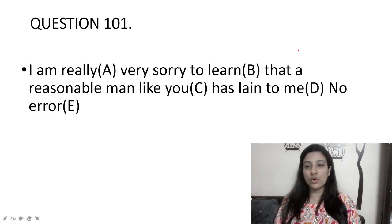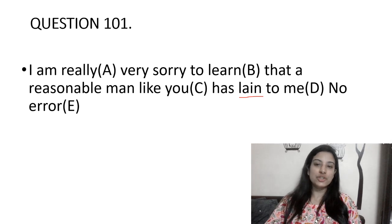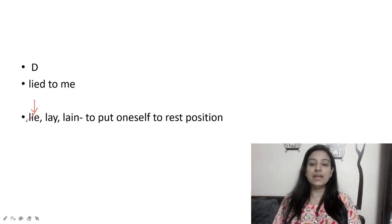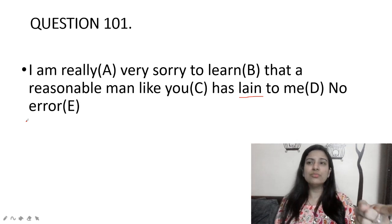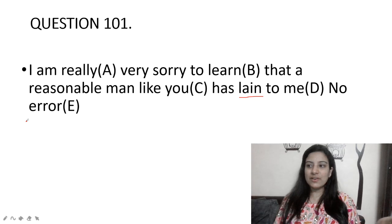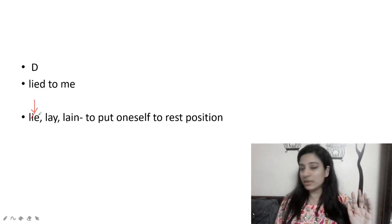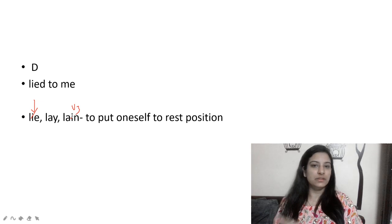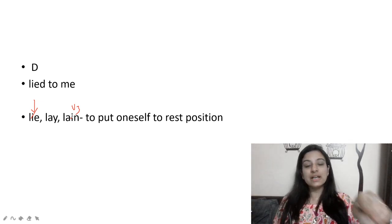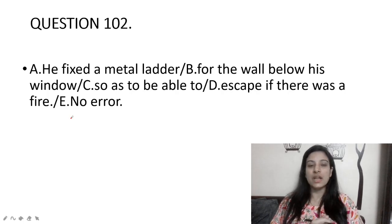I'm really very sorry to learn that a reasonable man like you has lain to me. 'Lain' is actually the V3 form of 'lie' — but of the 'lie' meaning to recline, not to deceive. Here the speaker wants to say a reasonable man told a lie, so it should be 'has lied.' The V3 of the 'lie' meaning to lie down is 'lain'; the V3 of 'lie' meaning to tell a falsehood is 'lied.'